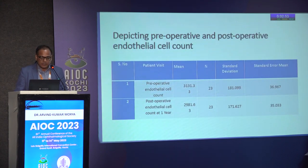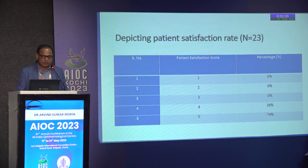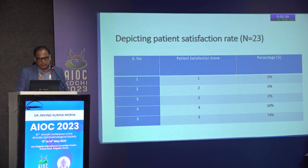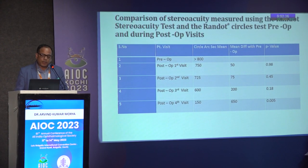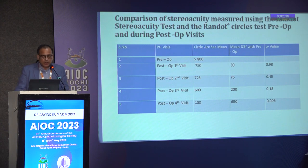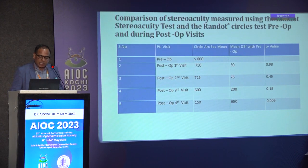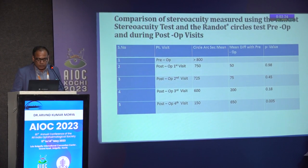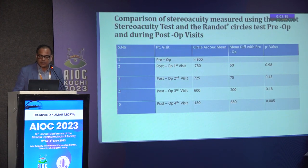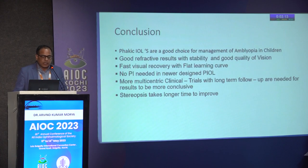Patient satisfaction rate among 21 of 23 patients was very satisfied or extremely satisfied. Stereo acuity measured using the Randot stereo acuity test improved from more than 800 arc seconds to 150 arc seconds at the last visit, with a significant p-value difference at 18 months. In conclusion, phakic IOLs are a good choice for management of amblyopia in children, with good refractive results, stability, good quality of vision, faster visual recovery, and no PI needed in the newer design phakic IOLs. However, more multicentric clinical trials with long-term follow-up are needed, and stereopsis takes longer time to improve.